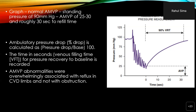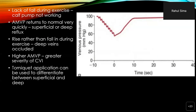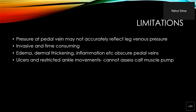Ambulatory venous pressure abnormalities were overwhelmingly associated with reflux and chronic venous disease but not well with obstruction. The lack of fall during exercise indicates that the calf pump is not working well. If the pressure returns to normal very quickly, it indicates superficial or deep reflux. A rise rather than a fall during exercise could indicate occlusion of the deep veins. The higher the venous pressure, the greater the severity of chronic venous insufficiency. A tourniquet may be applied to differentiate between superficial and deep reflux.